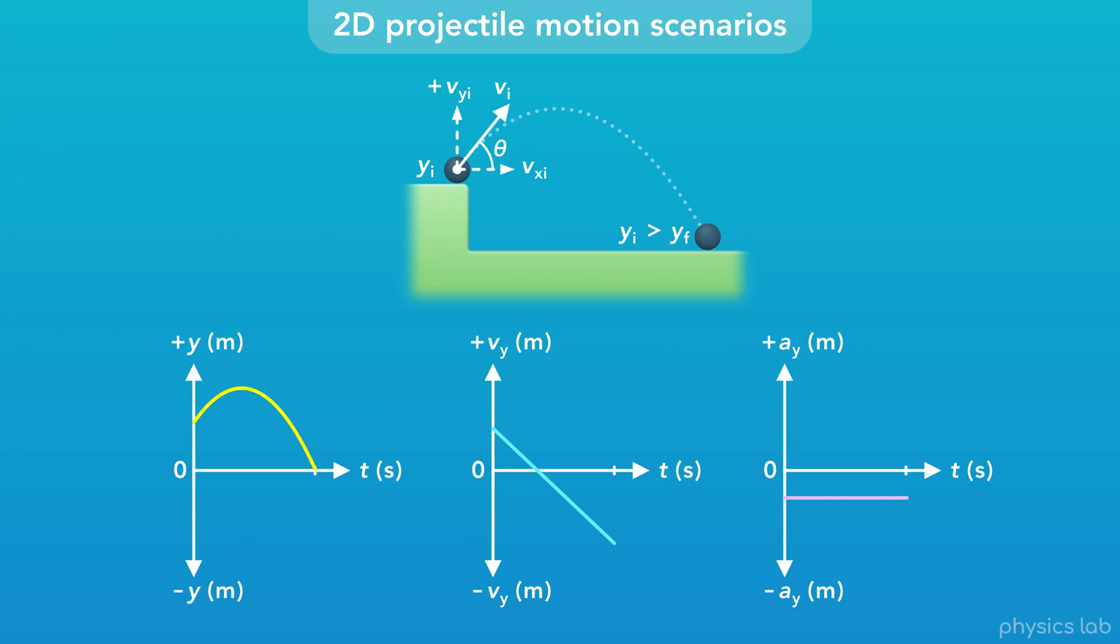If the initial height is greater than the final height, and the launch angle is upwards, the graphs look like the last example, but they're flipped. The y position starts at some height and ends at 0. It reaches the maximum height and 0 y velocity in less than half of the total time.